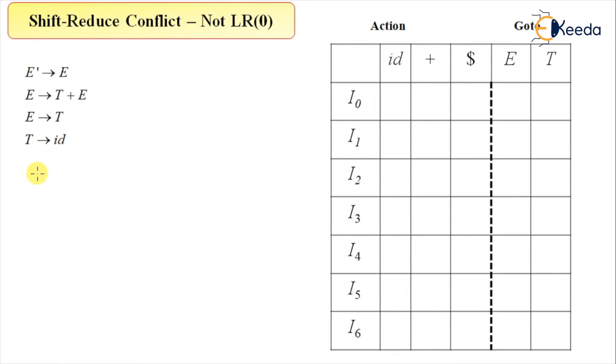So this is the grammar and I'll create an LR0 collection for it. This is E prime derives E, E derives dot E, E derives T dot plus E, putting a dot over here, and then E derives T dot T, and dot is in front of T, and then T derives dot id. So this is my first state, I0 state I can call it.